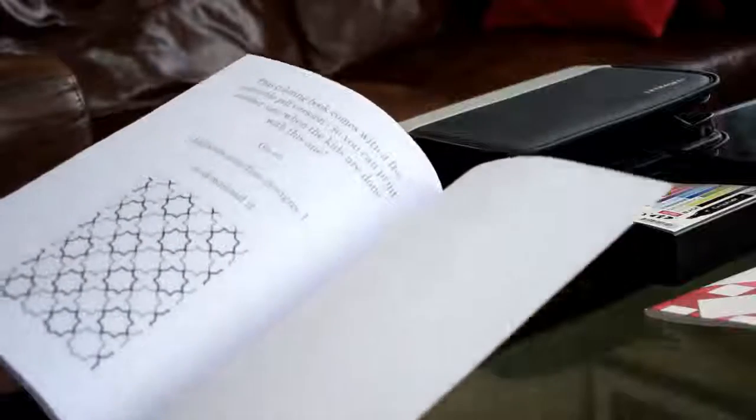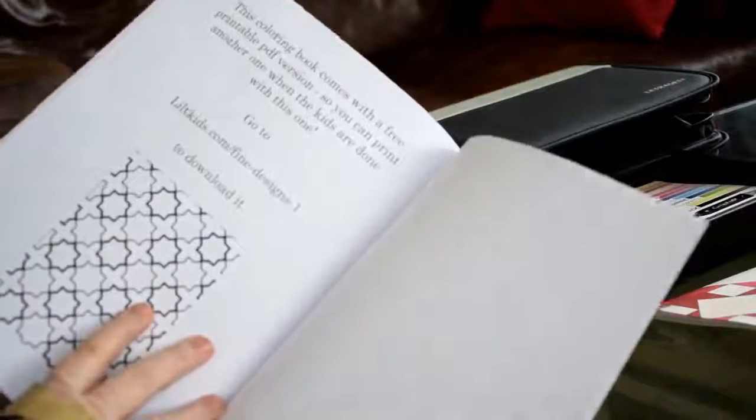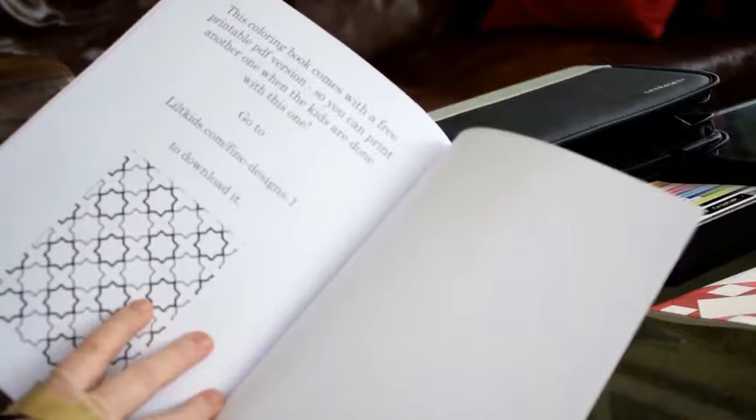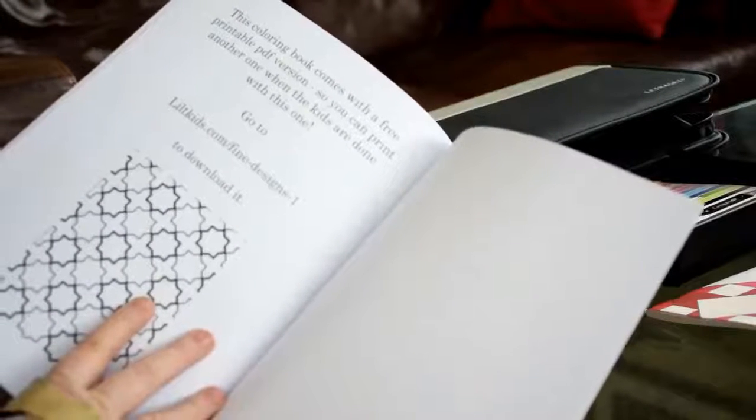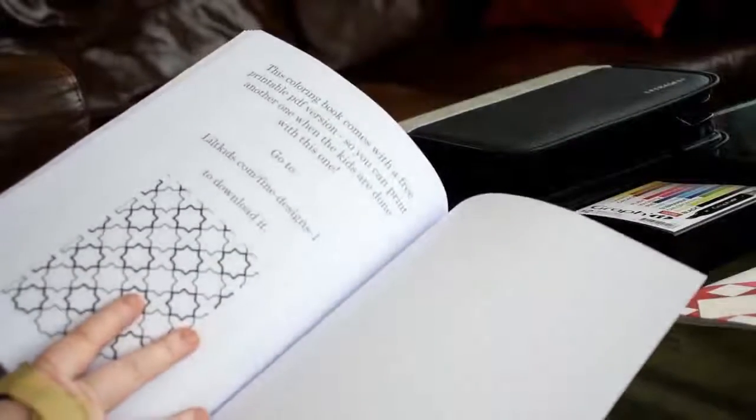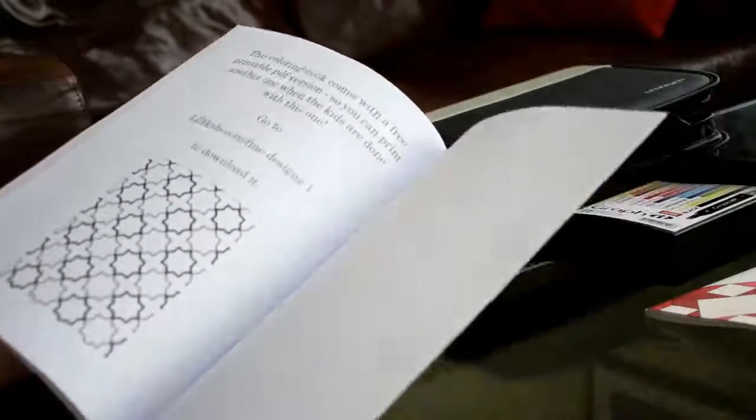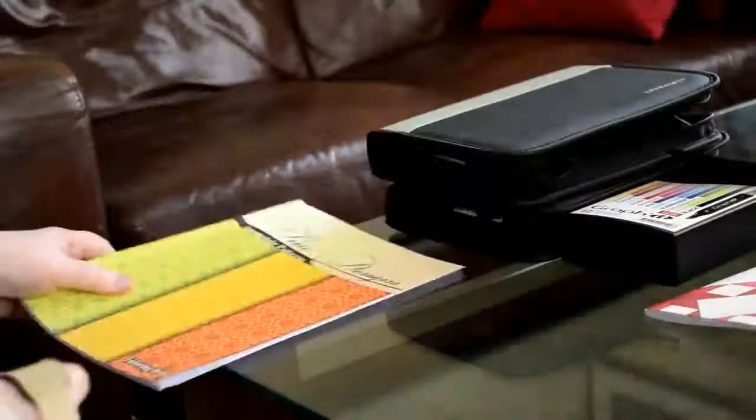So that is my first book and it's called Fine Design Geometric Patterns Coloring Book. And the nice thing about these is if you purchase the book, it comes with a free printable PDF version so you can actually print another one when you're done. When you finish coloring this if there's one particular one you wanted you could actually print it out maybe on stronger card and that way you could use the alcohol based markers. So that's my first one.